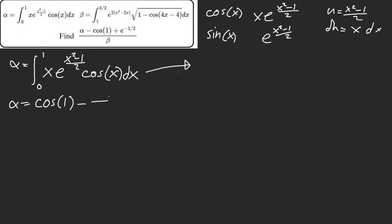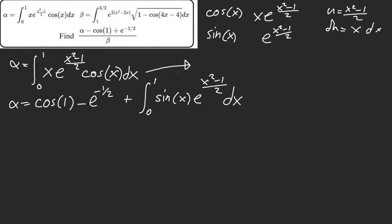That's so nasty. I'm going to keep it like this. Look how suspicious that is — cosine(1) minus e to the... and it cancels this out. I'm going from one to zero and I have sine(x) · e^(x²-1/2). That's it. I'm going to stop right here because obviously I cannot integrate any further — there's no closed form for this, or at least no elementary function. There's no way I'm integrating that by hand.